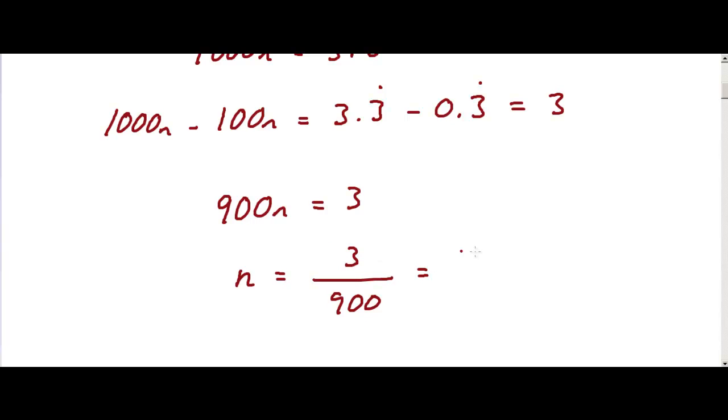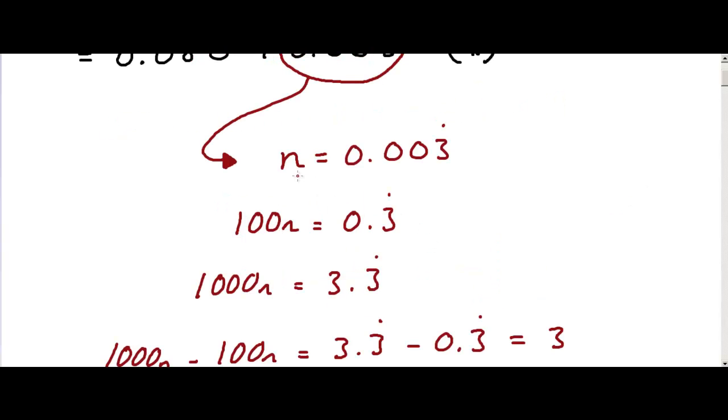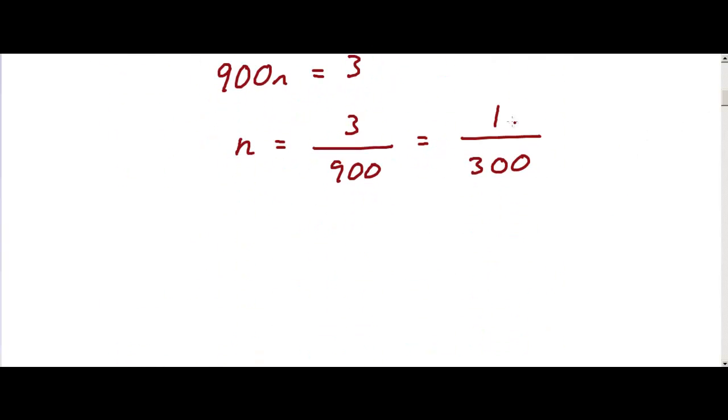And this simplified becomes 1 over 300. So we know that n, which equals 0.003 recurring, is actually 1 over 300.